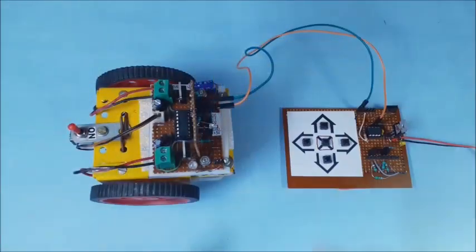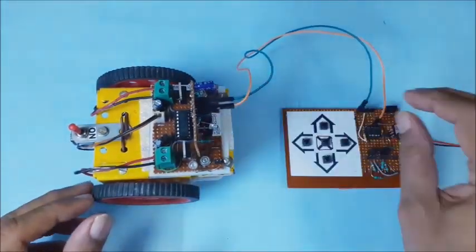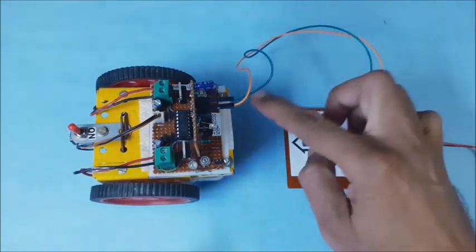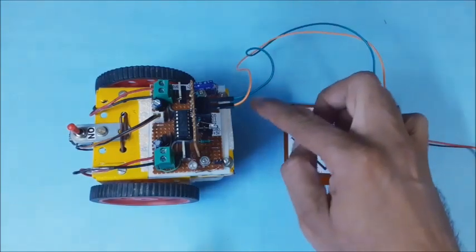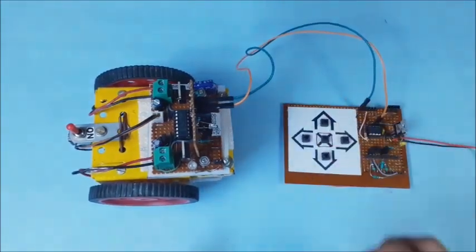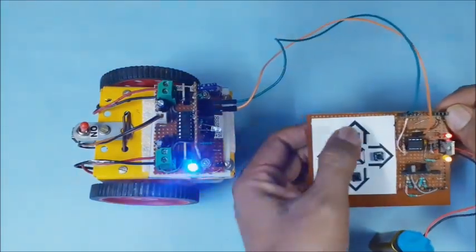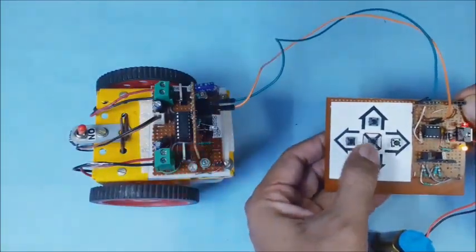Connect both the transmitter and receiver boards using jumper wires for preliminary testing. This is signal connection wire and this is ground connection wire. Switch on power supply to both the boards. Test the working of small robot by pressing various keys on keypad.